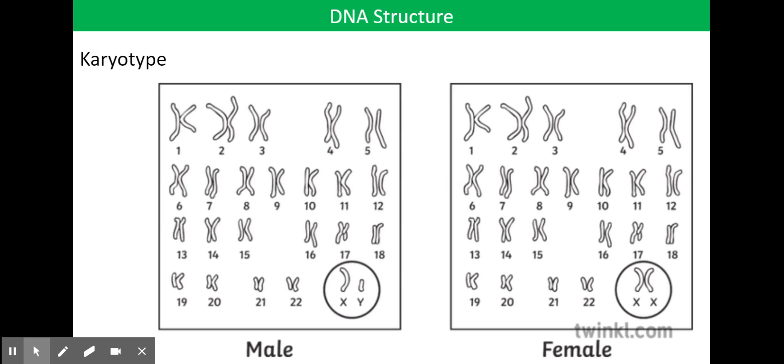Now on the slide in front of you, you can see two karyotypes, a male karyotype on the left hand side and a female karyotype on the right hand side. A karyotype is an individual's collection of chromosomes. Now the male karyotype we can see differs ever so slightly to the female karyotype in that males have an XY and females have an XX.